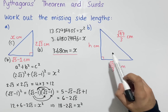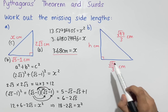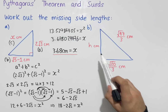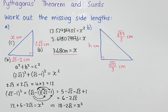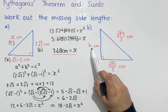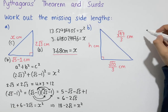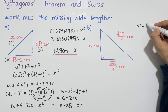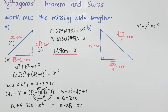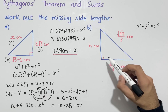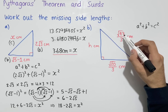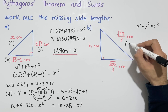For the next question we have another right-angle triangle with two side lengths and a missing side. However, this time the missing side is not the hypotenuse. We can still use Pythagoras' theorem to work out the missing side length h. The hypotenuse — the side opposite the right angle — is √(47/3), which we label as c.